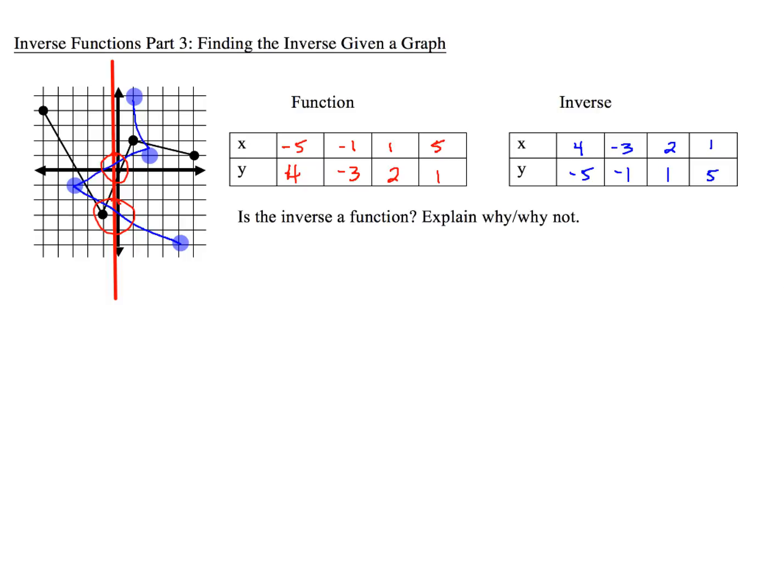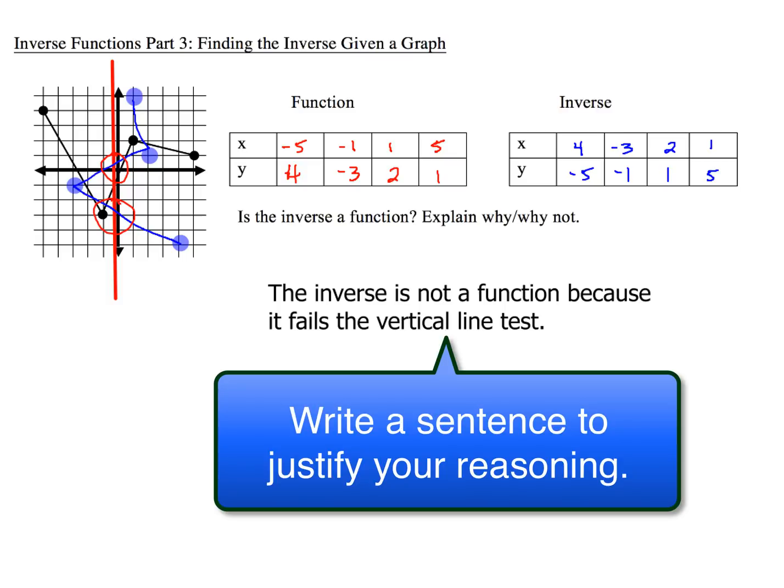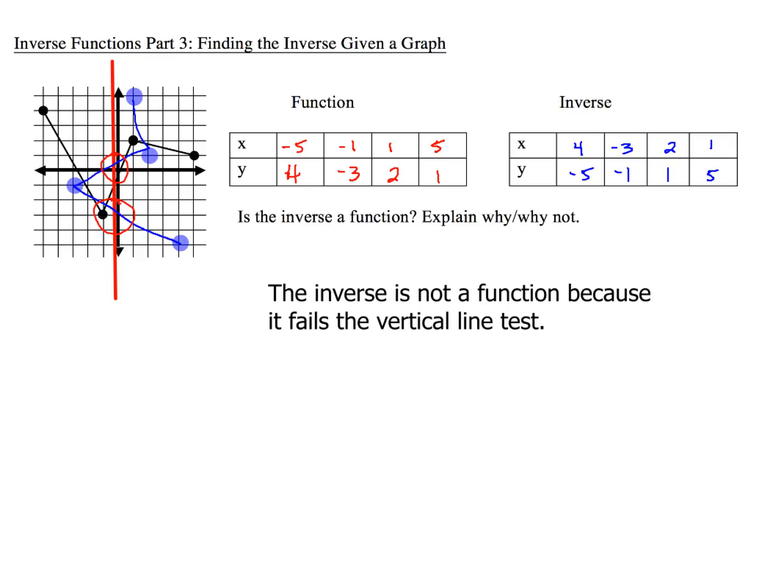So your sentence will go a little something like this: The inverse is not a function because it fails the vertical line test. Period. End of discussion. Booyah. You're done. Now don't mess that up and call it the pencil test because that's incorrect. It is not called the pencil test. It's called the vertical line test. So make sure you write that sentence correctly with the correct terminology.